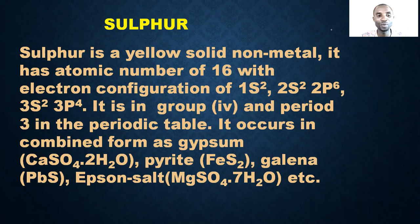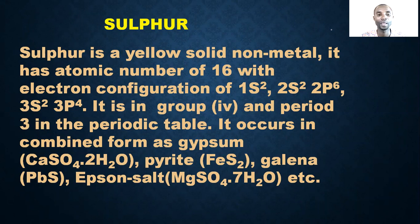The full electronic configuration is 1s², 2s², 2p⁶, 3s², and 3p⁴. Count it and it gives you 16. Sulfur is in group 4 of the periodic table and period 3.